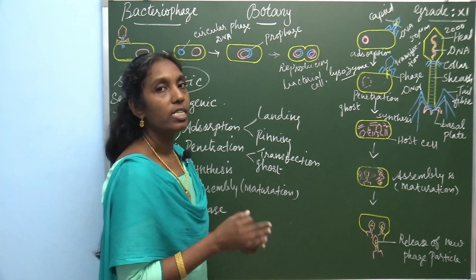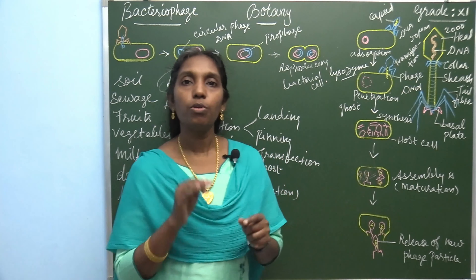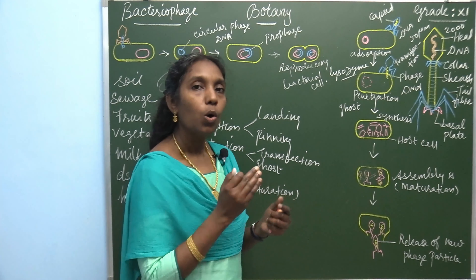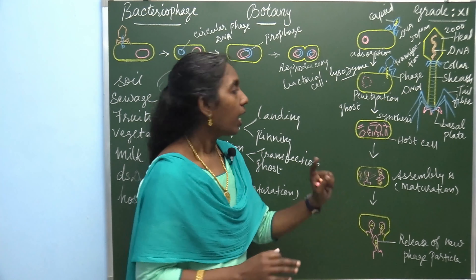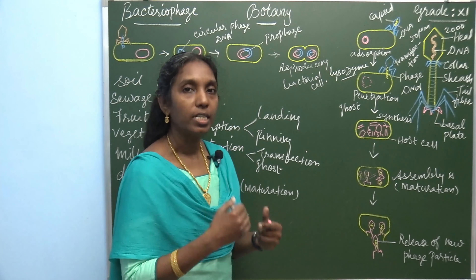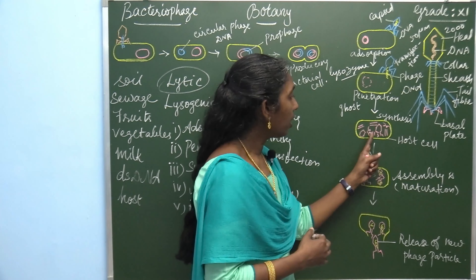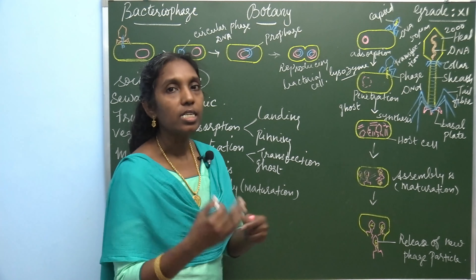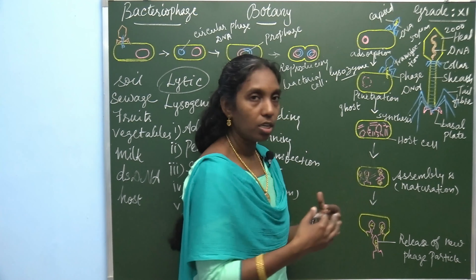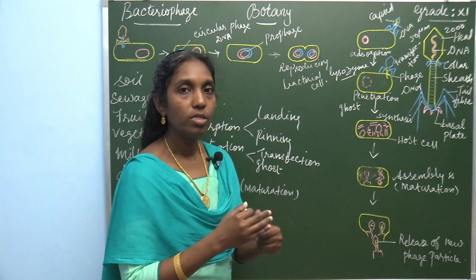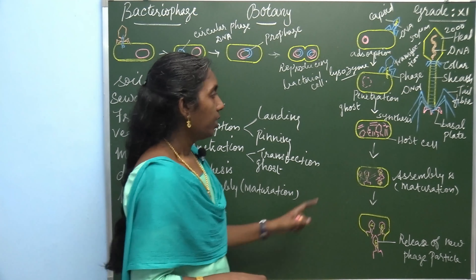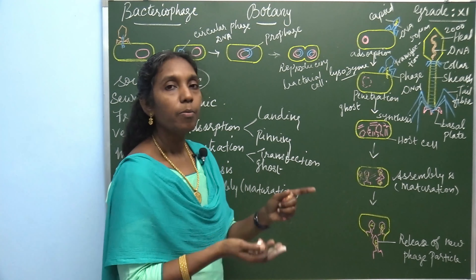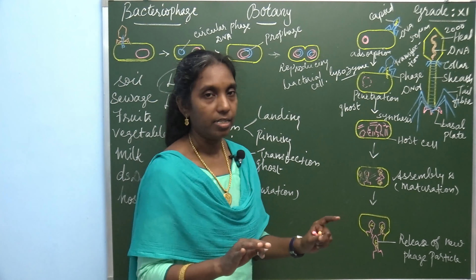The third step is synthesis. When the DNA enters the host, it arrests the synthesis of host DNA — the host DNA begins to degenerate. The phage DNA starts to multiply. The head, DNA, tail, tail fibers, collar — each and every part is synthesized. As the phage DNA is synthesized, the host DNA material degenerates. Everything is highly synthesized within the cell wall of the bacteria.